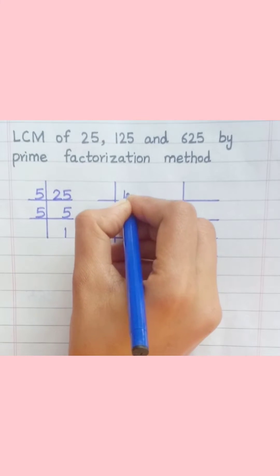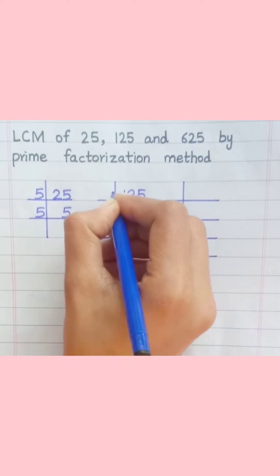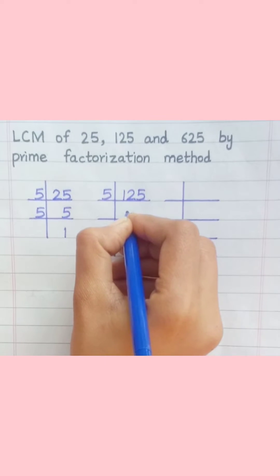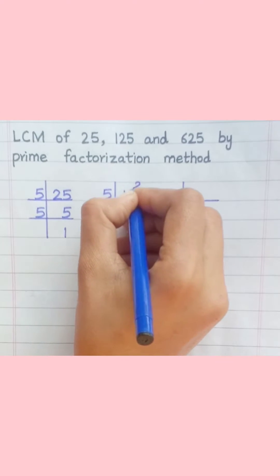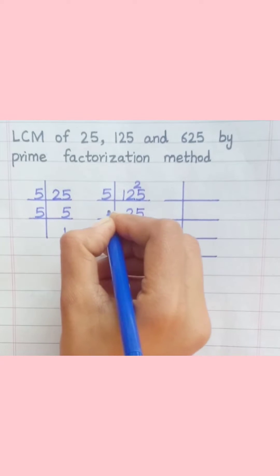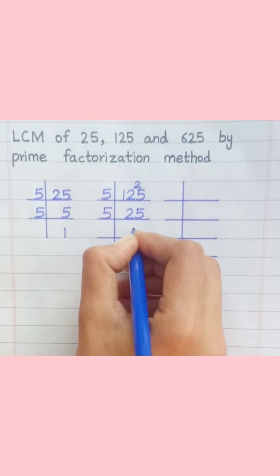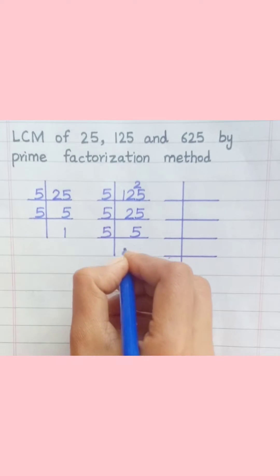125: 5 twos are 10, 5 fives are 25, 5 fives are 25, 5 ones are 5. So 125 equals 5 multiply 5 multiply 5.